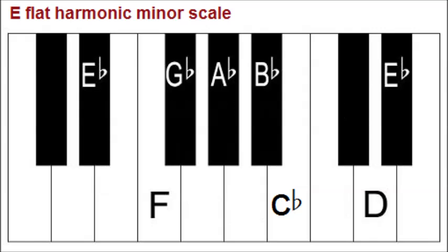Primary chords in a minor key are based on the 1st, 4th, and 5th notes of the minor scale. For minor keys, the scale used when forming primary chords is the harmonic minor scale.